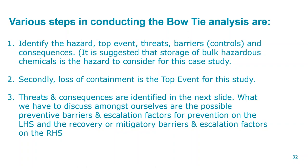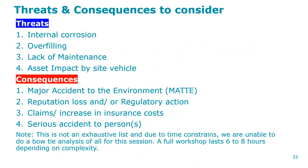We're assuming the top event for this study is loss of containment. We'll identify possible preventive barriers and escalation factors on the left-hand side — risk controls to stop threats moving to the other side — and then mitigatory barriers and escalation factors on the right-hand side, for how to recover when the worst has happened. How am I doing so far? Are you still alive and kicking? Yes, good.